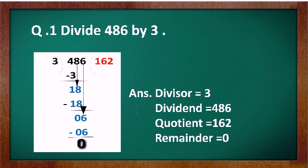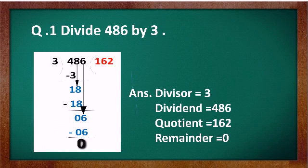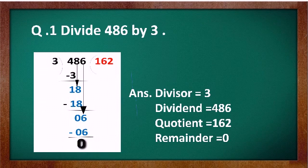Divide 486 by 3. Here the divisor is 3 and the dividend is 486. The quotient is 162 and the remainder is 0. First, 3 × 1 = 3, subtract from 4, and we get 1, so we have 18. Bring down the 8, then 3 × 6 = 18. Bring down 6, then 3 × 2 = 6. If we follow the steps there will be no error in division.